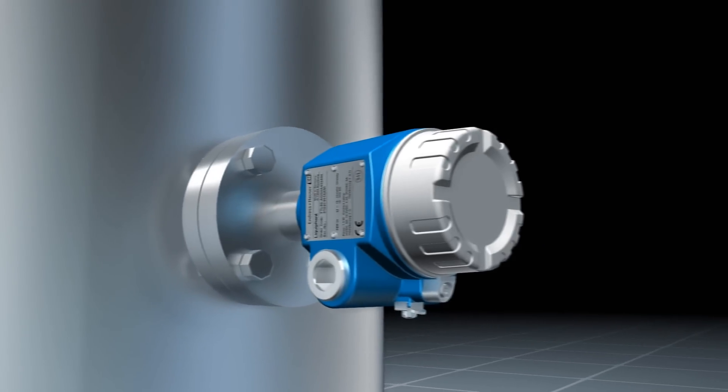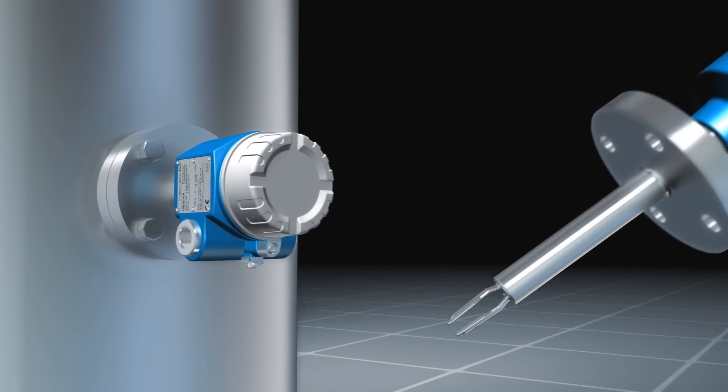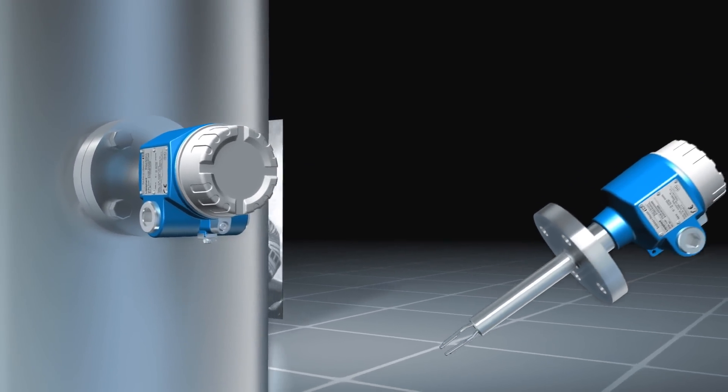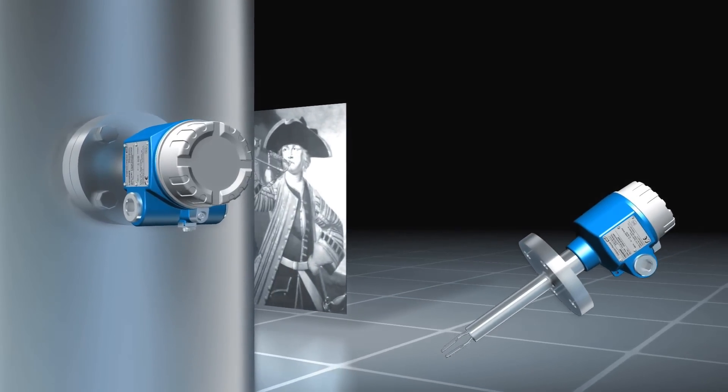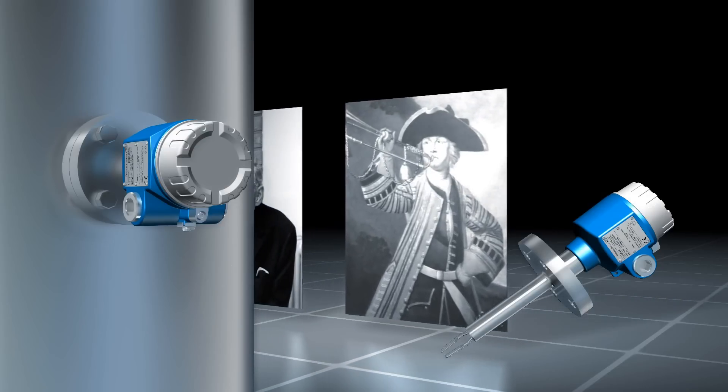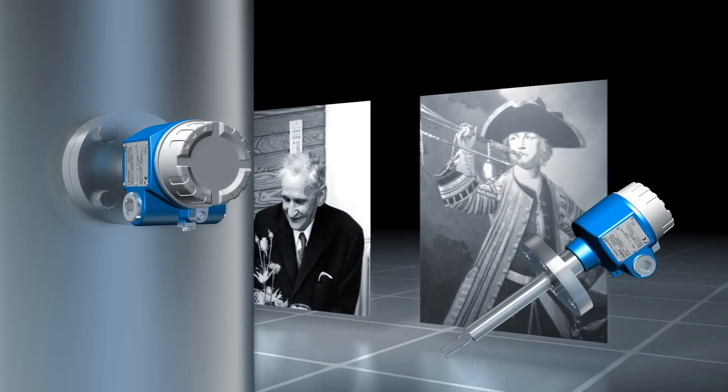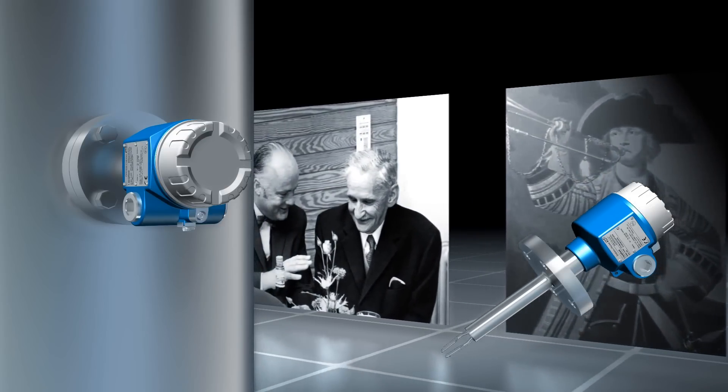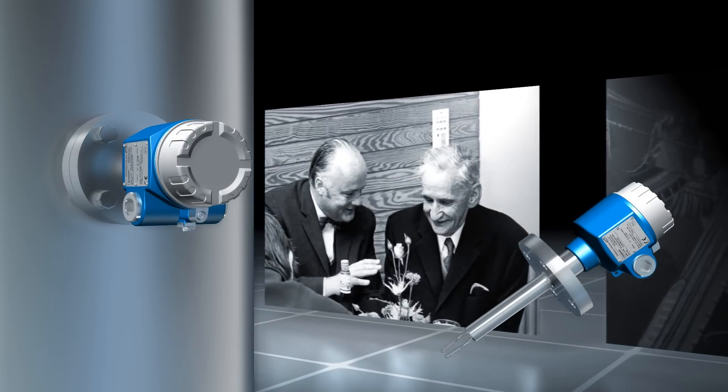For example, point level measurement in liquids or bulk solids according to the vibronic principle, also called tuning fork principle. The tuning fork, which John Shore designed more than 300 years ago, served as a basis for the vibronic principle invented by Endress+Hauser in 1967.